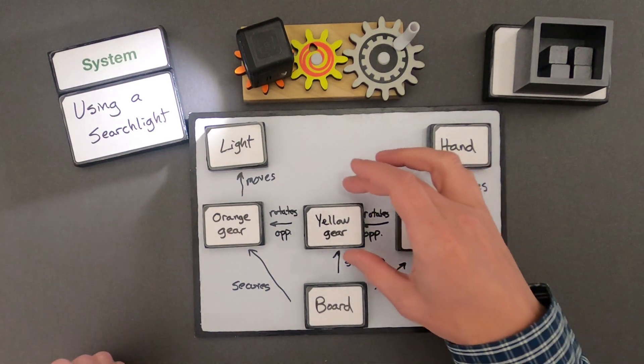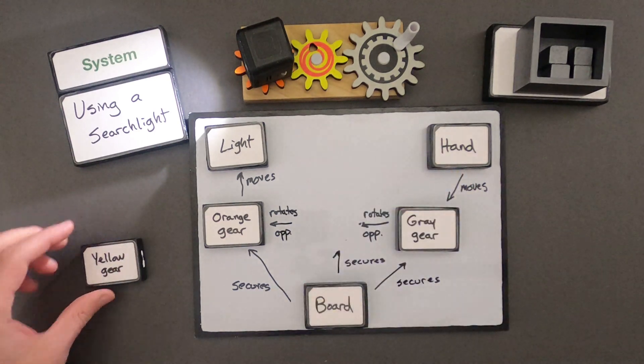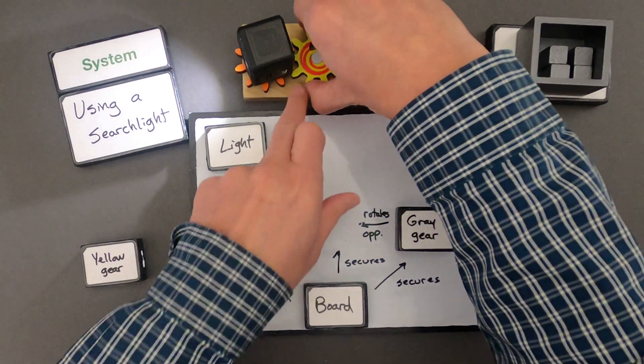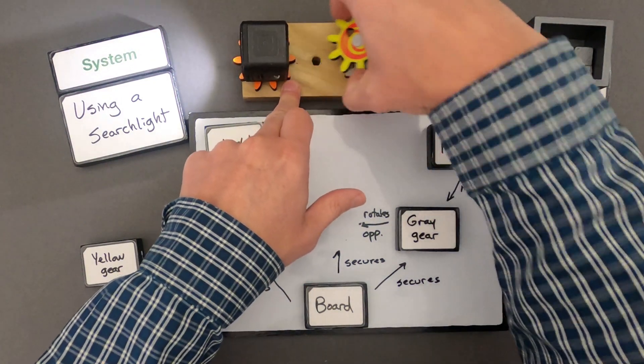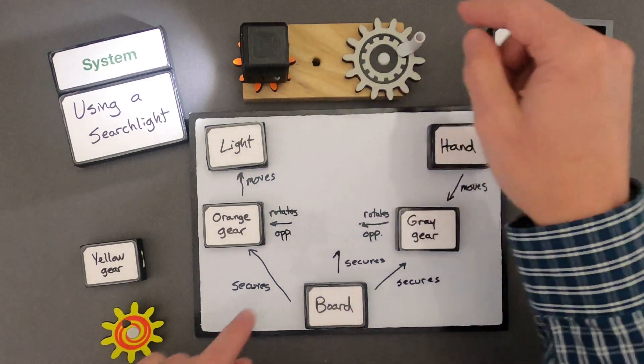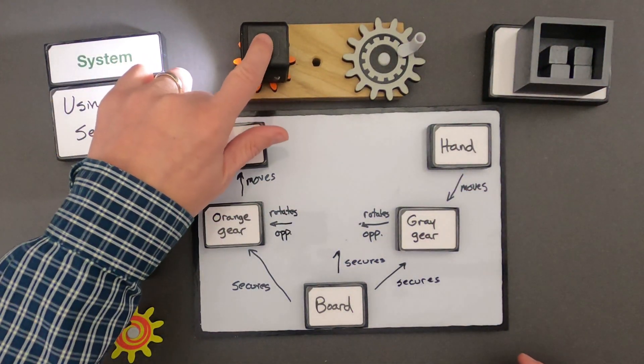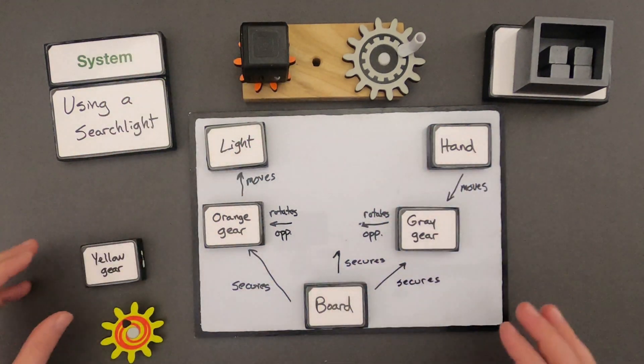And now you can start playing around with it. So if I remove the yellow gear, what would happen? Well, the gray gear would still be secured. But according to my thinking around systems, if I do that, then the light shouldn't turn. And so I can test that. And so that's a simple way of doing some thinking around the system.